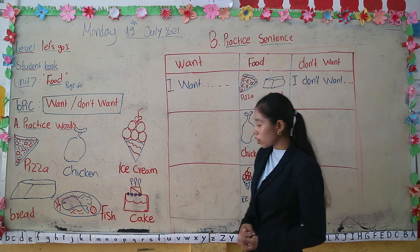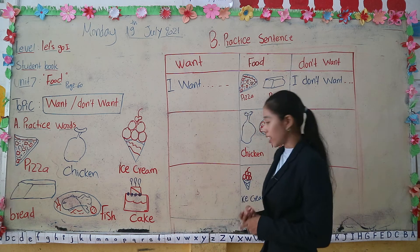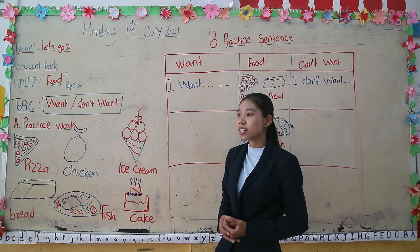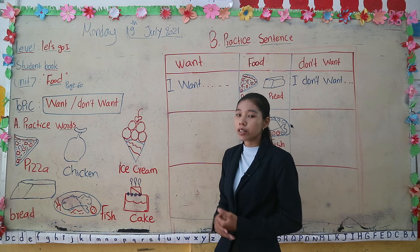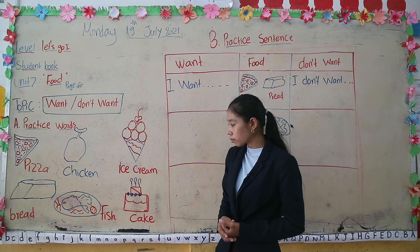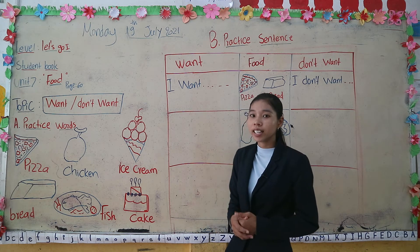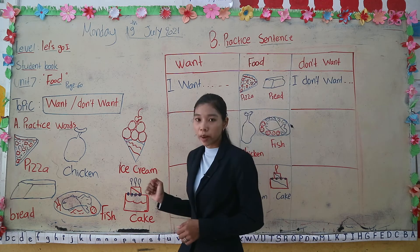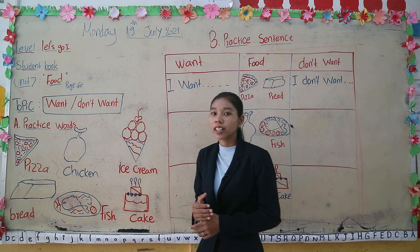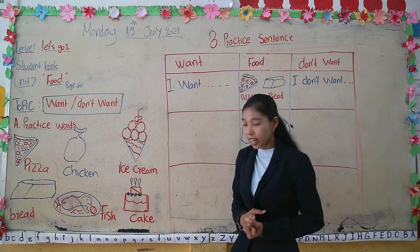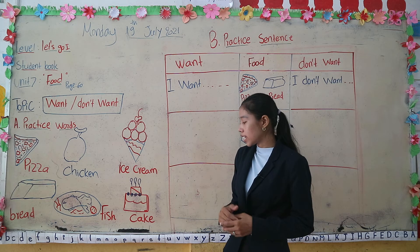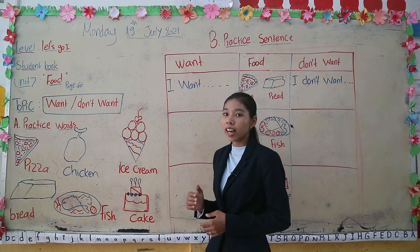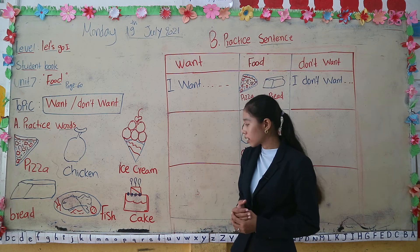Okay everyone, the last picture and the last word — when you have a birthday, what do you buy for a surprise? It's a cake, right? Cake, cake. Can you spell the word cake? I can spell C-A-K-E. Cake, cake, cake.